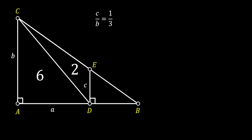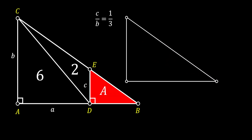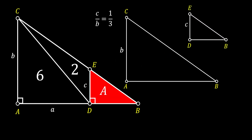Let's first take a look at the right triangle DBE and we are going to label its area as A. We can isolate our big triangle ABC, which has a height equal to b, and also isolate the small red triangle DBE, which has a height of c. Now we know that both of those triangles are right triangles, and we can also see that both of them share the same angle at point B. Since those two triangles have two congruent angles, this means that those two triangles are similar.